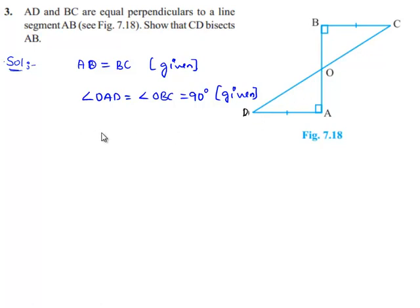Now, if we consider triangle BOC and triangle AOD, AD equals BC as given that they are equal perpendiculars. Angle OAD is equal to angle OBC is equal to 90 degrees.